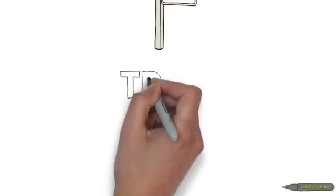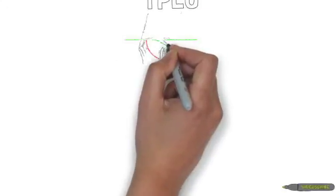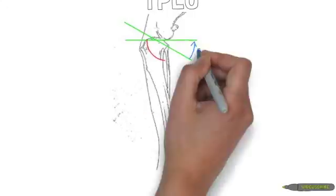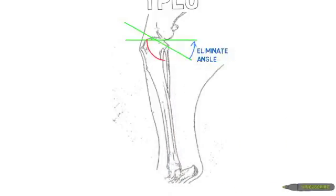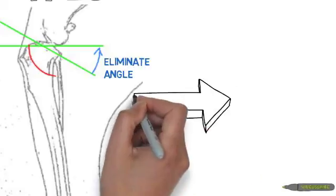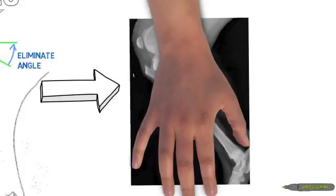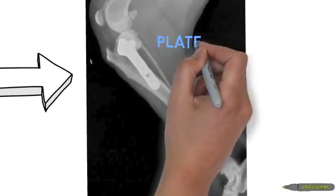The second procedure is called a tibial plateau leveling osteotomy or TPLO. This procedure is performed on larger dogs that are very active and involves cutting the top of the tibia and rotating the top part of the bone to reduce the tibial plateau angle. This stabilizes the knee and reduces the strain on the cruciate ligament. A plate is then placed on the bone to hold everything together. Again, the results with this procedure are excellent.